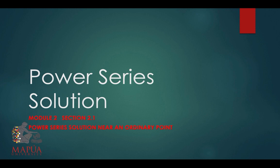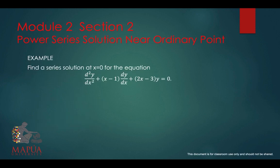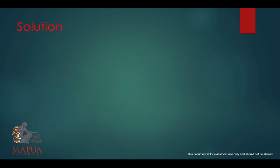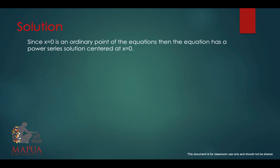For this session, we will try to solve a differential equation using a power series solution near an ordinary point. To find the series solution at x equals 0 for the equation d squared y over dx squared plus (x minus 1) dy over dx plus (2x minus 3)y equals 0. Since x equals 0 is an ordinary point of the equation, it has a power series solution centered at x equals 0.